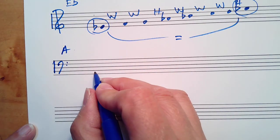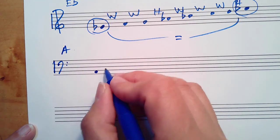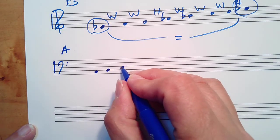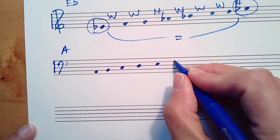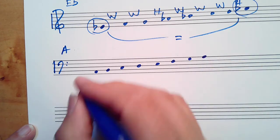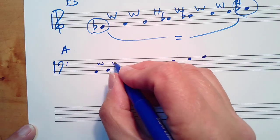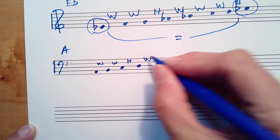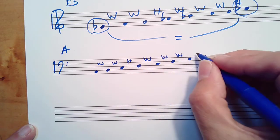So start on A. Step number one: B C D E F G A. Whole whole half whole whole whole half.